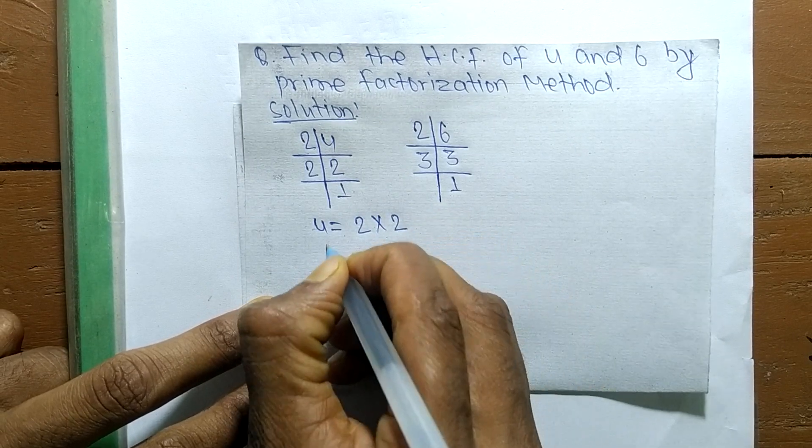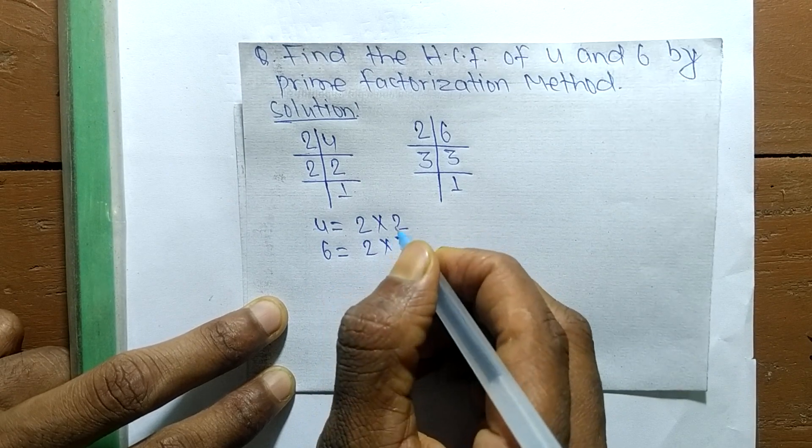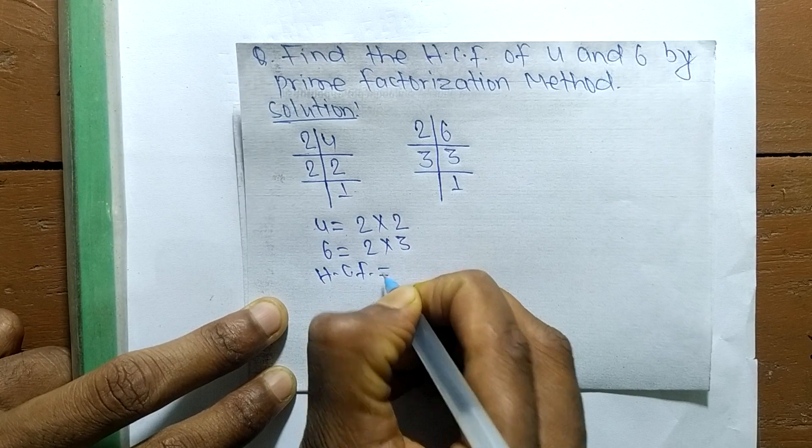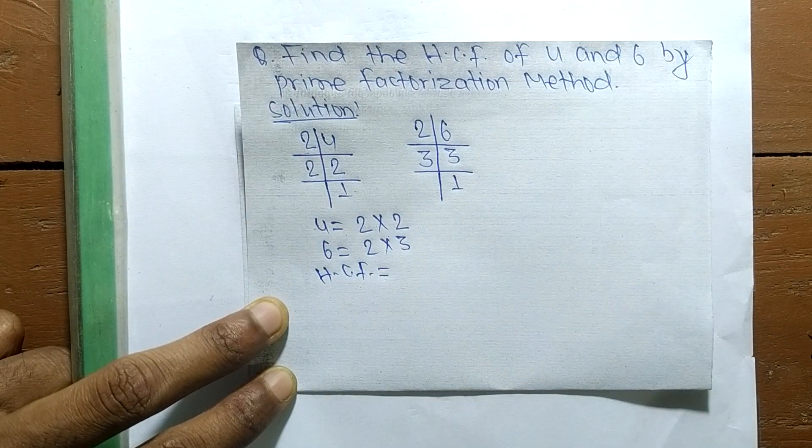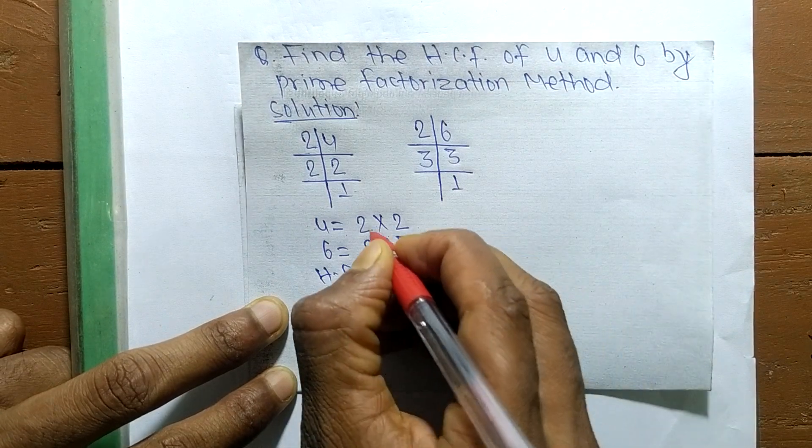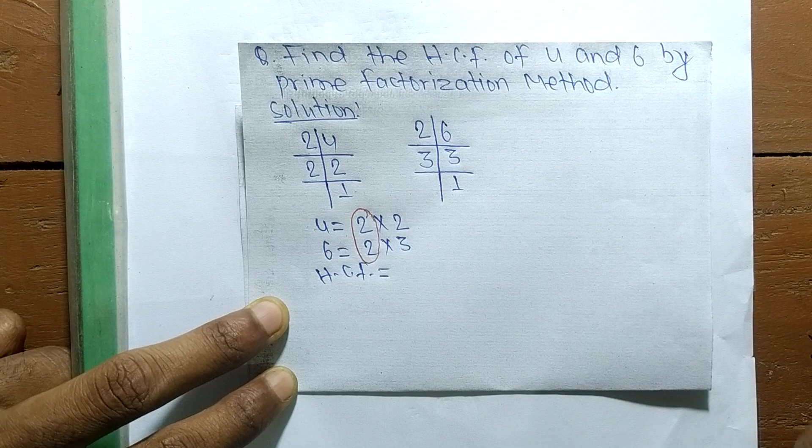Similarly, 6 is equal to 2 times 3. Now we have to find out the common elements in all these prime factors. The first common element here is 2, and the others are not common.